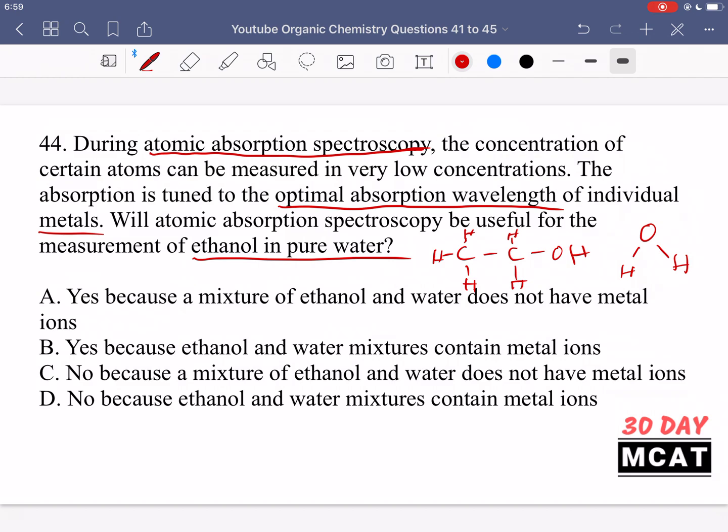Option A says yes because a mixture of ethanol and water does not have metal ions—it would actually be no, but the rest is correct that the mixture does not have metal ions. Option B says yes because the mixtures contain metal ions—no, they do not. Option C says no because a mixture does not have metal ions—that's our correct answer. Option D says no because the mixtures contain metal ions—that's incorrect. This question requires that you understand this new type of spectroscopy, what it's looking for, and see if the solution has that requirement.